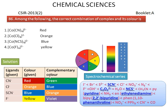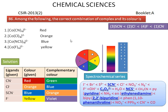Here the given ligands and their corresponding colors are shown. To select the correct answer, we have to find the complementary color of the given color. For red, its complementary color is green. For orange, it is blue. For blue, its complementary color is orange. For yellow, its complementary color is violet.